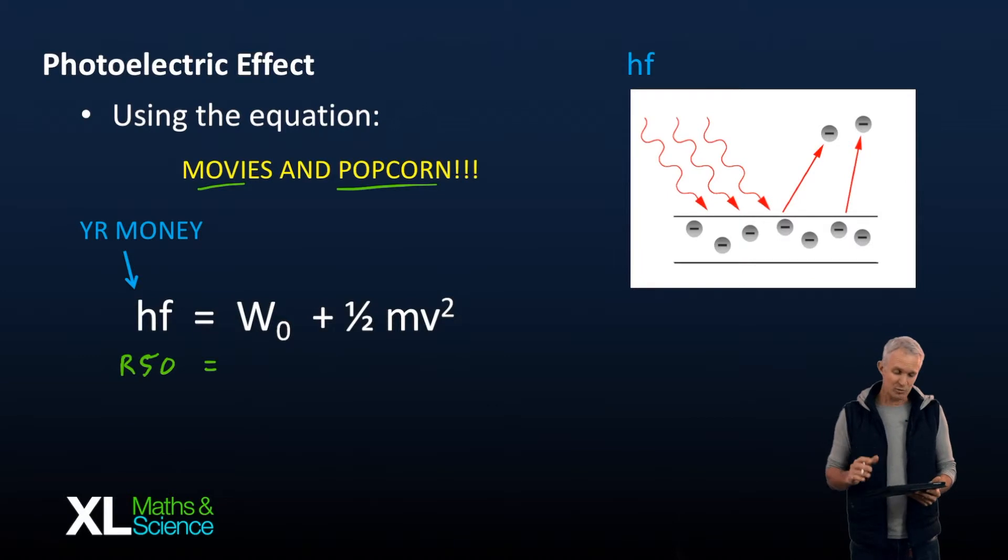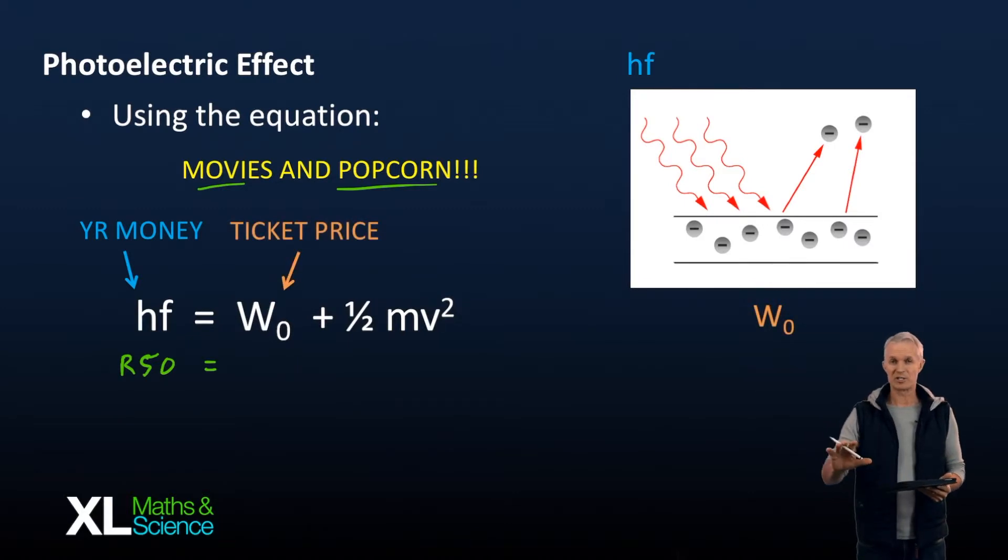And what are you going to do with that money when you get to the movies? Well, you've come to see a movie, so the first thing you're going to do is buy a ticket, and that is what the work function is like. It's the amount of energy required by the metal in order to just let an electron out.